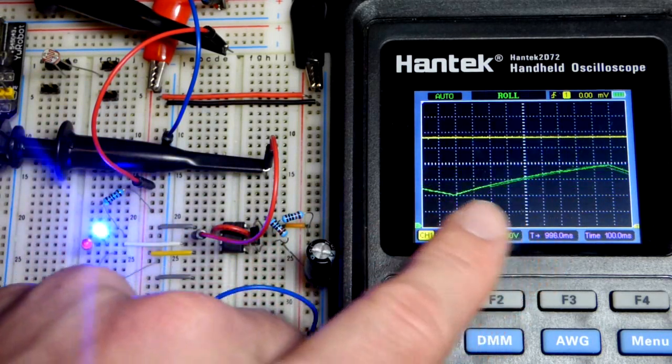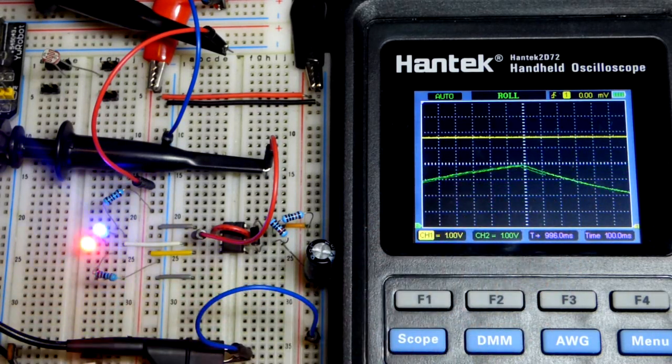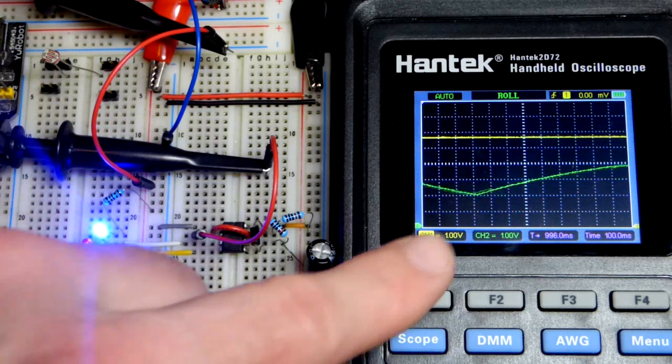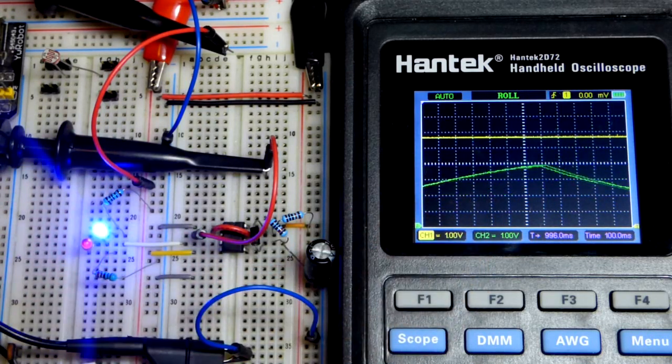The capacitor starts discharging out to two volts, one-third of the supply voltage, and then it goes from low to high, and the cycle just keeps going back and forth.